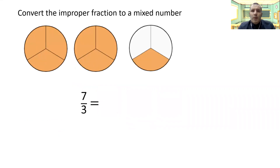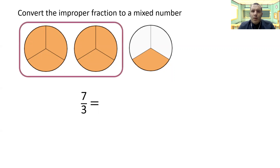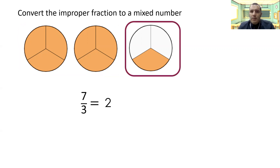So how can we convert the improper fraction to a mixed number? We need to think of how many parts we've got. We've got seven thirds here shown in the pizzas above. I've got two full lots of three, so two full pizzas worth, and I've got one third left over. Those are the two wholes, so I can write that as two. And then I've got my fraction left — three parts is my denominator, and I've got one piece, so that's one third. Converting the improper fraction to a mixed number gives me two and one third.